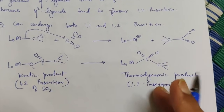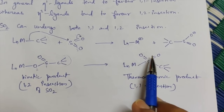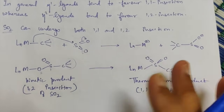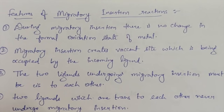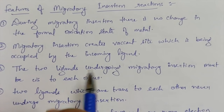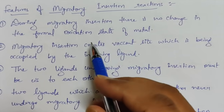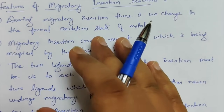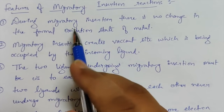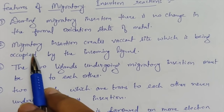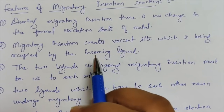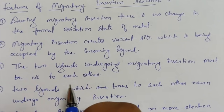Remember that SO2 can undergo both 1,1 and 1,2 insertion. Some important features of migratory insertion: the first point is that during migratory insertion there is no change in the formal oxidation state of metal — unlike oxidative addition where it increases, and reductive elimination where it decreases. The second point is that migratory insertion creates a vacant site which is occupied by the incoming ligand. The third point is that the two ligands undergoing migratory insertion must be cis to each other.